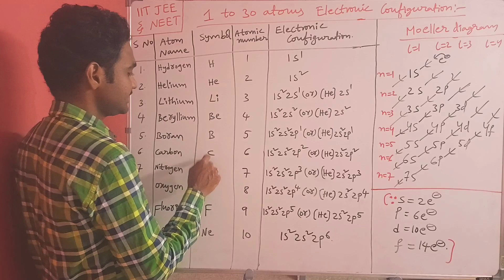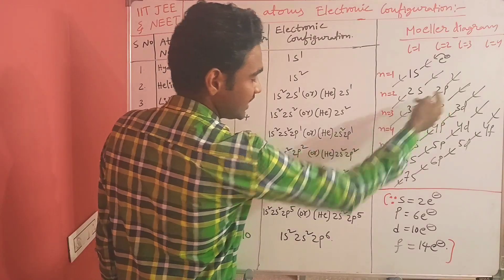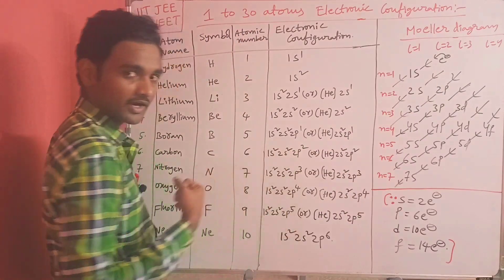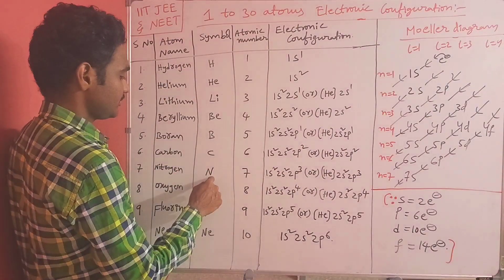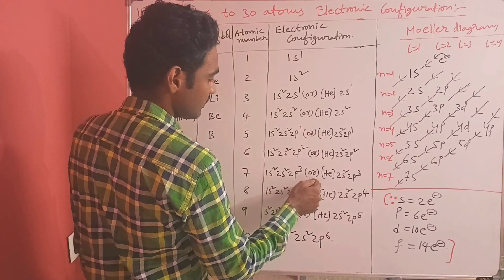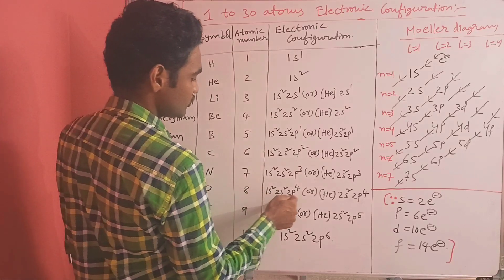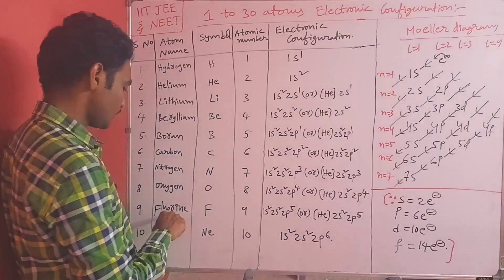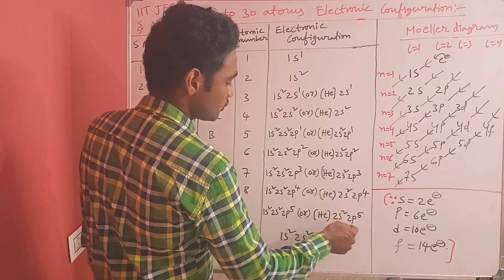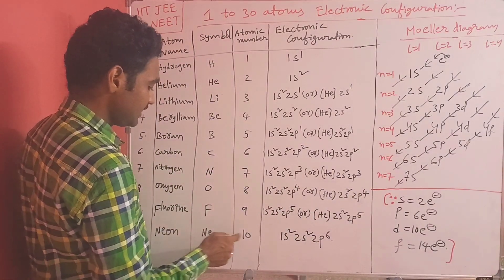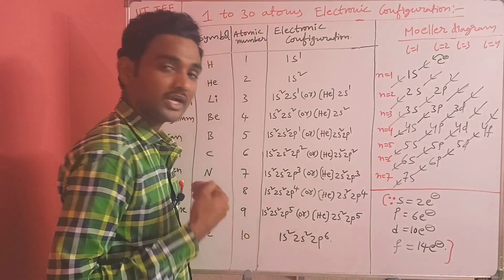Boron (B), atomic number 5: 1s2 2s2 2p1 — the next electron goes to 2p1; written as [He] 2s2 2p1. Carbon (C), atomic number 6: [He] 2s2 2p2. Nitrogen (N), atomic number 7: [He] 2s2 2p3. Oxygen (O), atomic number 8: [He] 2s2 2p4. Fluorine (F), atomic number 9: 1s2 2s2 2p5, overall [He] 2s2 2p5. Neon (Ne), atomic number 10: 1s2 2s2 2p6 — the 2p orbital is now completely filled with six electrons.